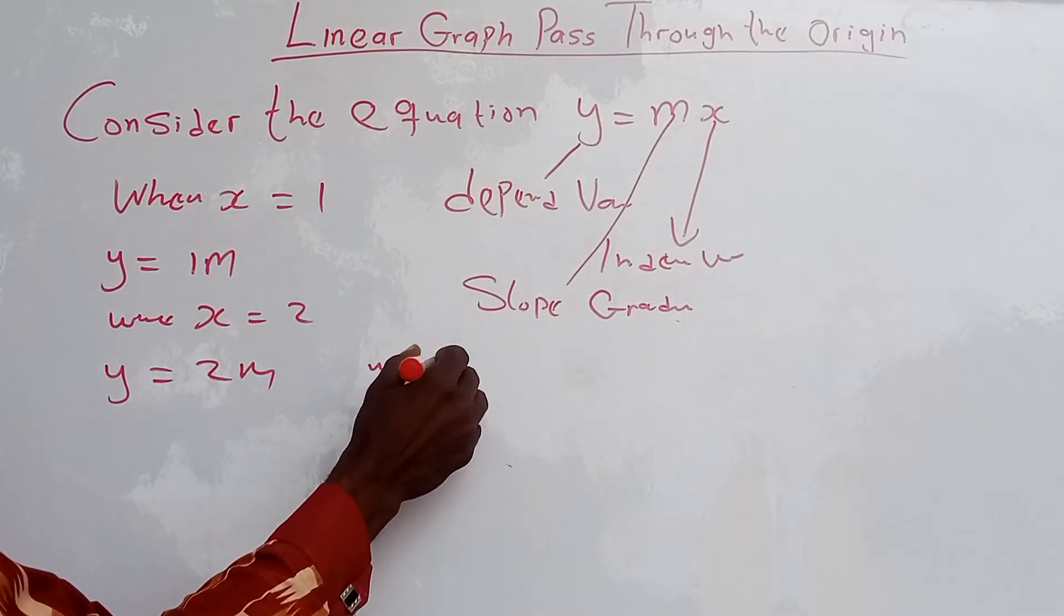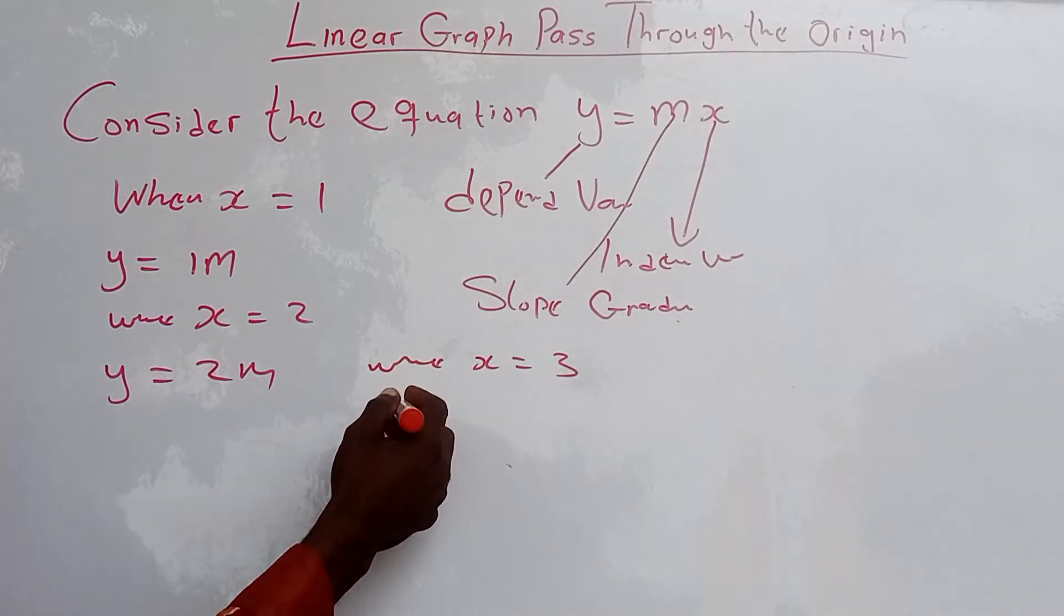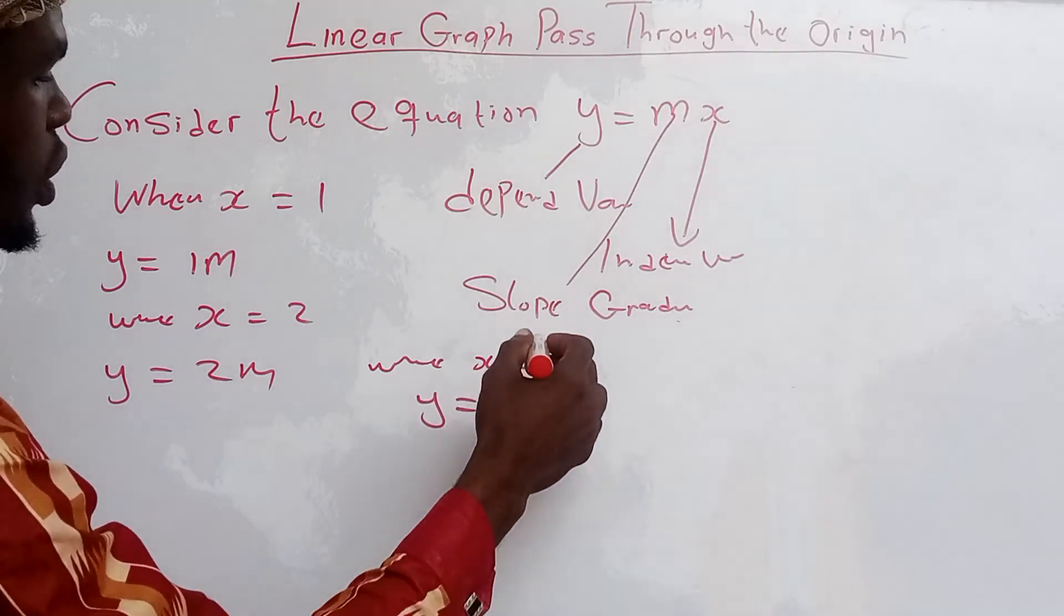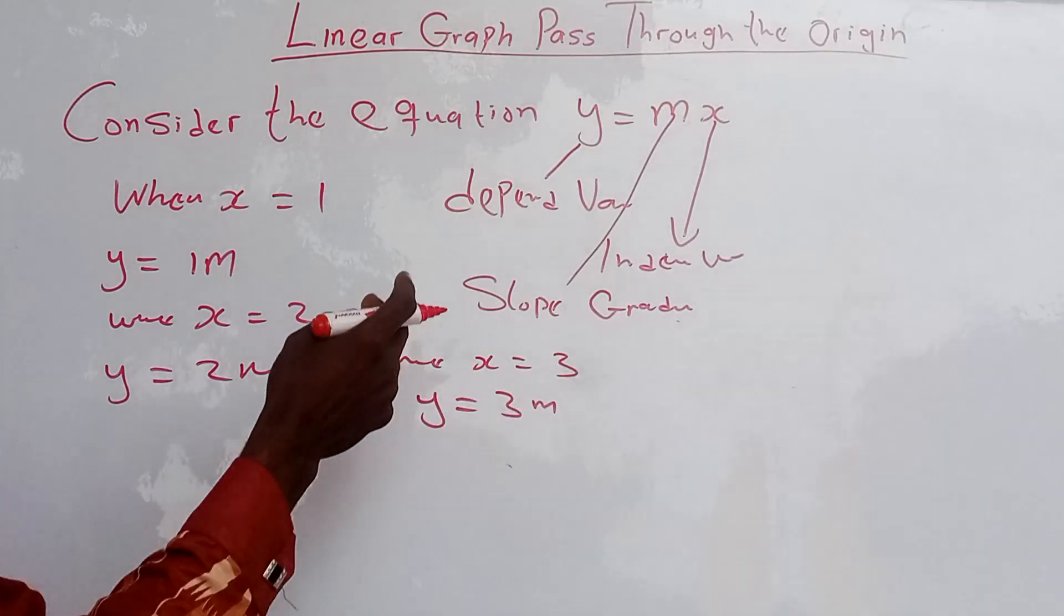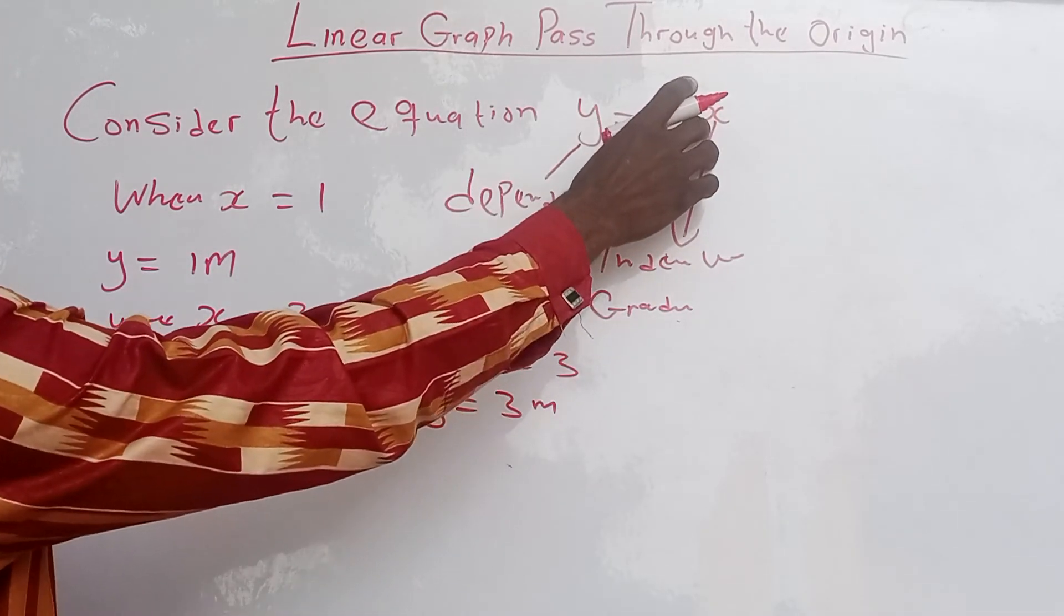When x equals 3, what is our value for y? Y equals 3m, because we input the value of x into our equation.